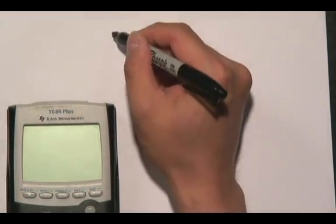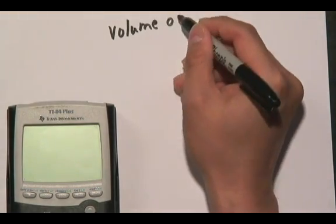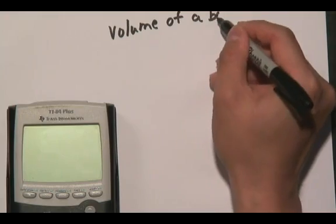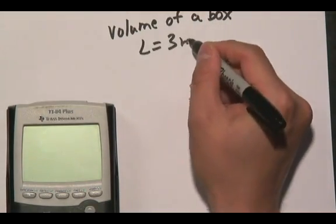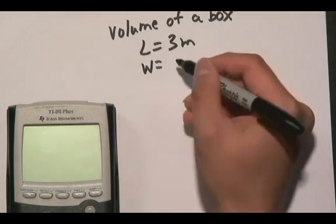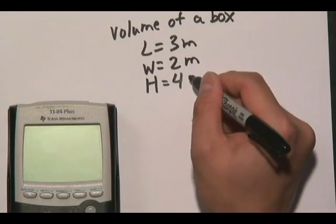So first suppose you want to find out the volume of a box where length is equal to three meters, width is equal to two meters, and the height of the box was four meters.